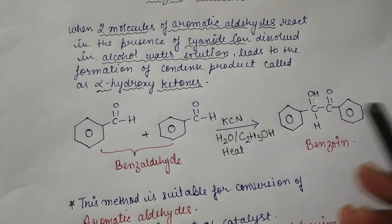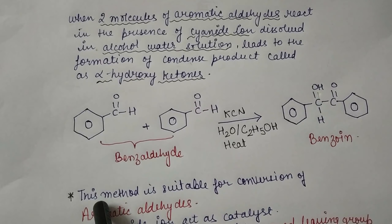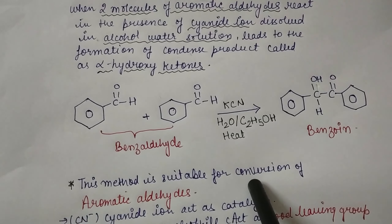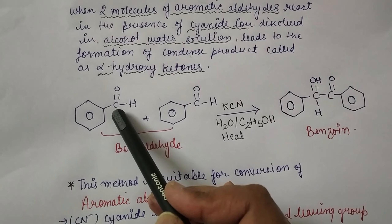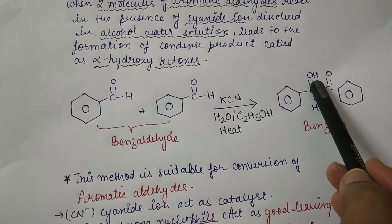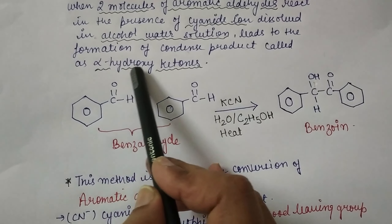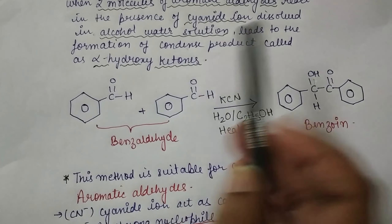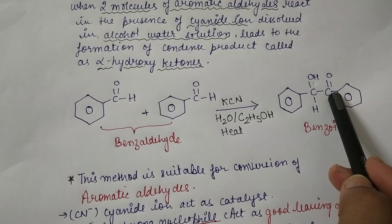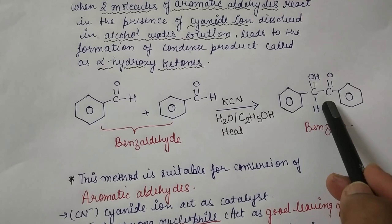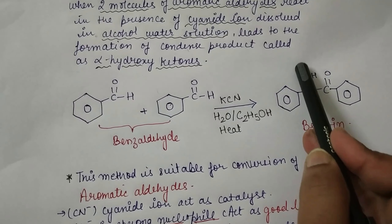Benzoin condensation reaction takes place in aromatic aldehyde. When two molecules of aromatic aldehyde react in the presence of cyanide ion dissolved in an alcohol-water solution, it leads to the formation of a condensed product called alpha hydroxy ketone. Here you can see the reaction: two molecules of benzaldehyde react in the presence of potassium cyanide, water, and ethanol, and benzoin is obtained as the final product.